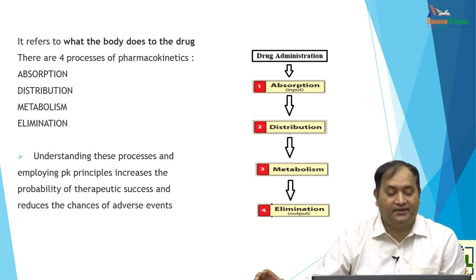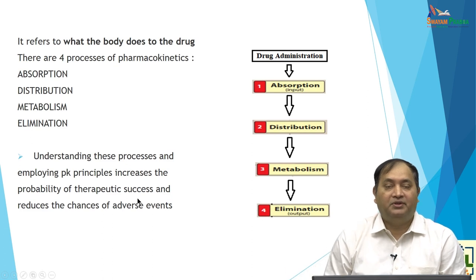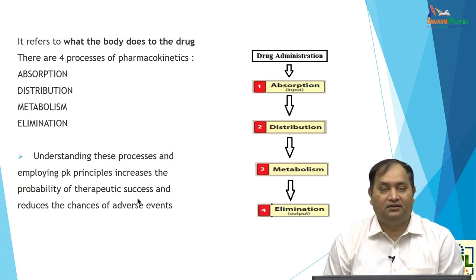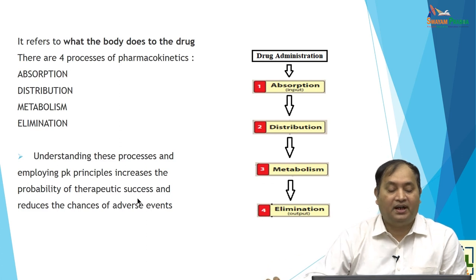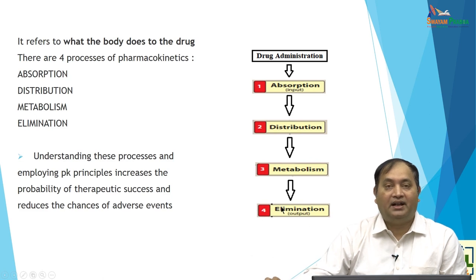To understand this process, we employ pharmacokinetic principles to increase therapeutic success. When you give a drug, you look at how much is absorbed and the bioavailability, and also whether the drug is tolerable — you have to look at the ADR profile and adverse events. Basically: the drug is given, absorbed, distributed, metabolized, eliminated, and ultimately you see the effect or therapeutic success.